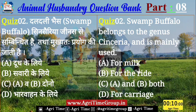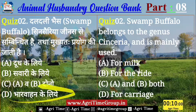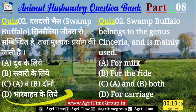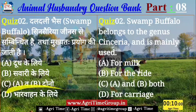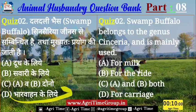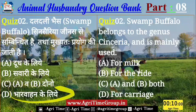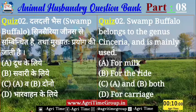Time up होता है, dear Agrarians। Quiz 2 का जिन्होंने D answer comment किया है — यानि कि भारवाहन के लिए — उन सभी का answer right है। दलदली भैंस, यानि कि Swamp Buffalo, Bubalus Sincerus genus — इसका जो प्रयोग किया जाता है वो किया जाता है भारवाहन के लिए।